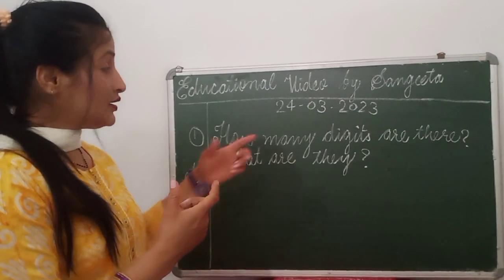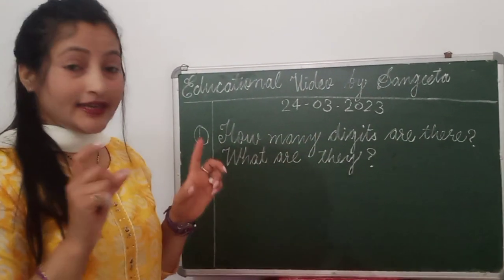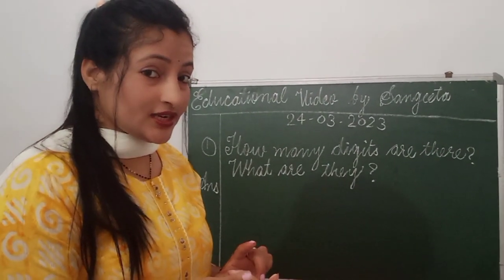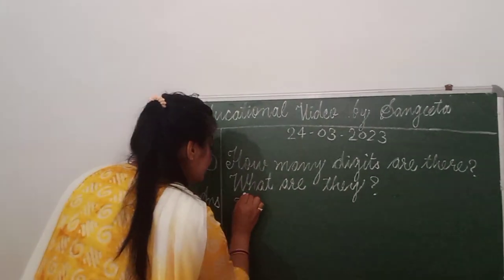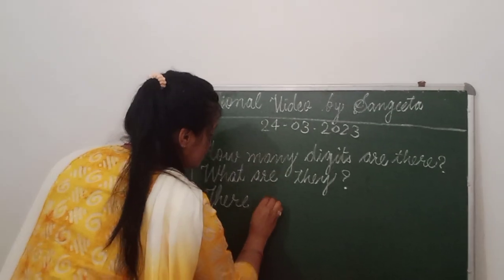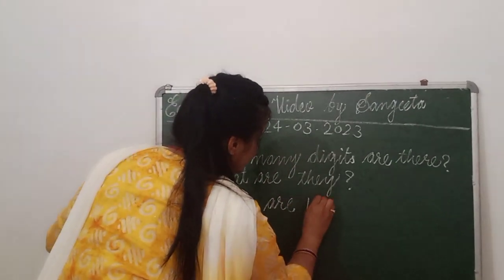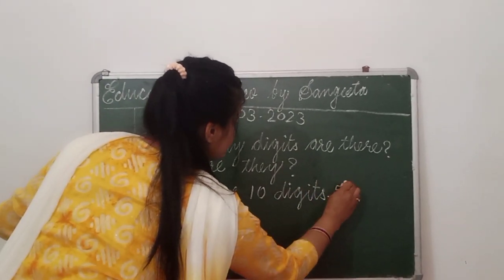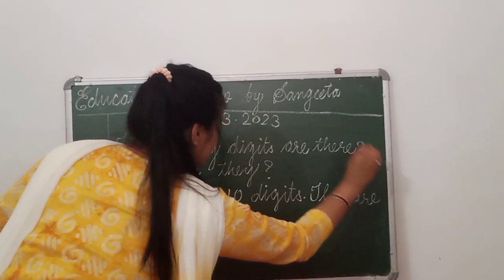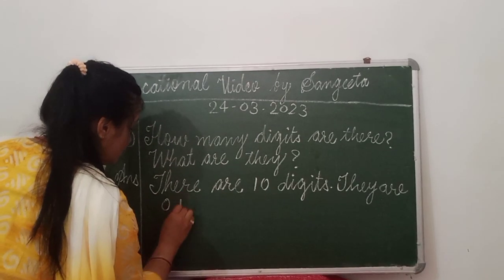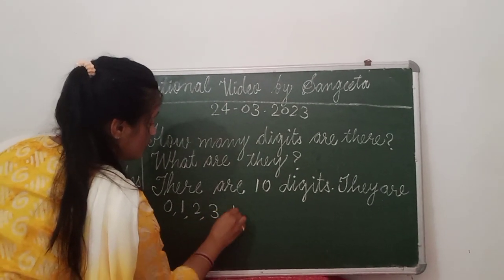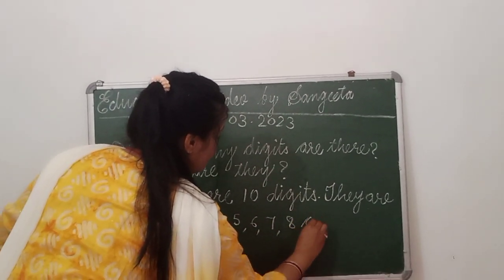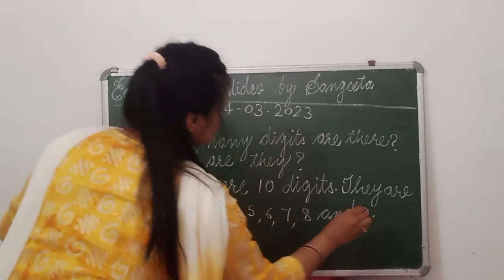How many digits are there? Digit means 'ankh'. So, how many digits are there and who are they? There are 10 digits. They are 0, 1, 2, 3, 4, 5, 6, 7, 8, and 9.